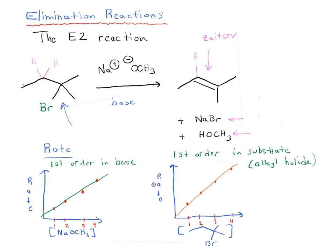So first order in base, first order in substrate, therefore it is second order overall. The rate law is second order overall. Therefore, what can we say about this? It can't be the same mechanism as the E1 because the E1 is only first order in substrate, and this is first order in substrate and in base.